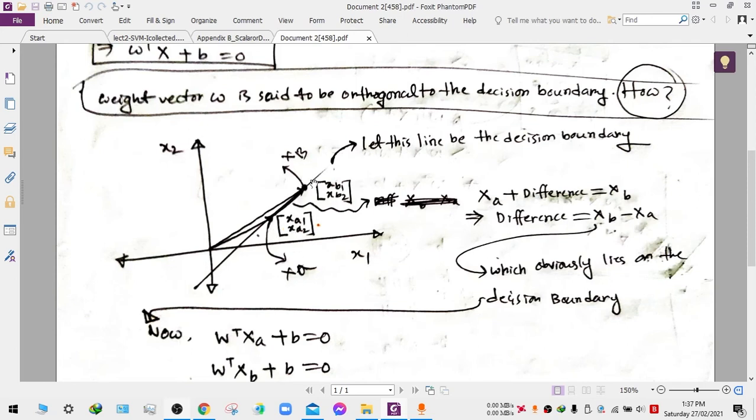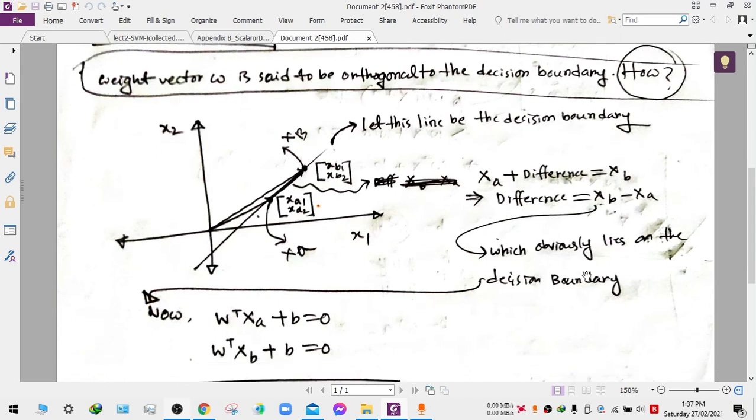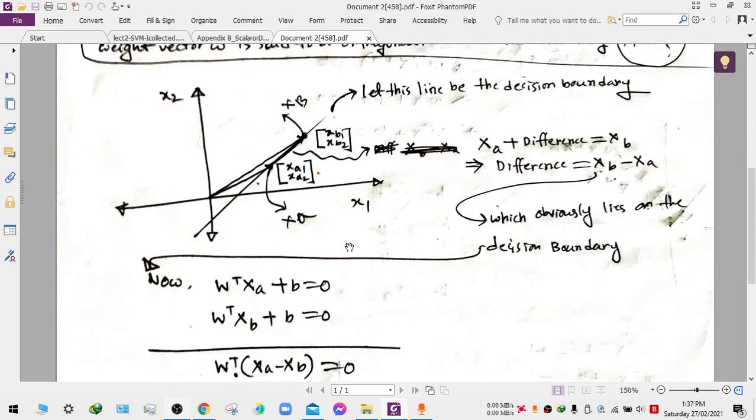This difference vector is perfectly aligned with the decision boundary. Okay, now for these two points we can get these two formulas.